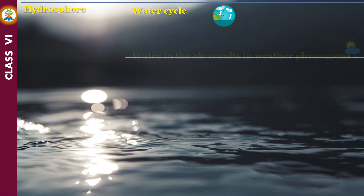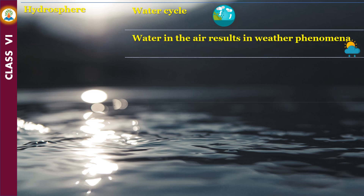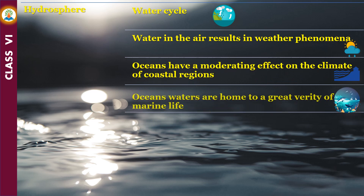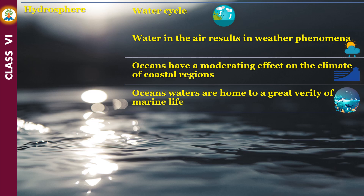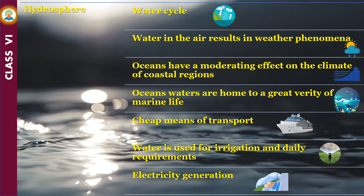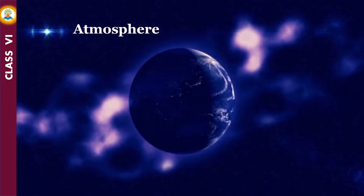The hydrosphere is useful to us in a number of ways. The water cycle is one of the factors that make life possible on earth. Water in the air results in weather phenomena. Oceans have a moderating effect on the climate of coastal regions. Ocean waters are home to a great variety of marine life, which is a source of livelihood to many people. Waterways serve as a cheap means of transport. Water from rivers and lakes as well as underground water is used for irrigation and daily requirements. Electricity can also be generated from water.